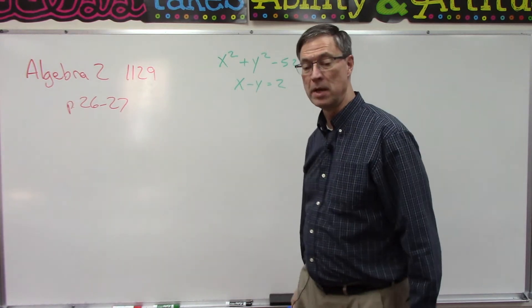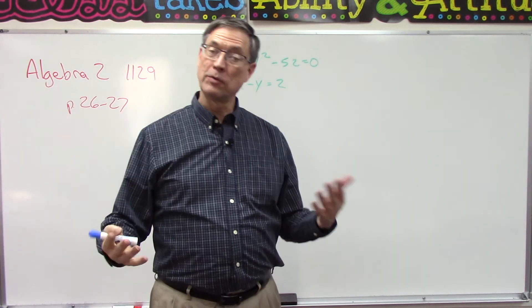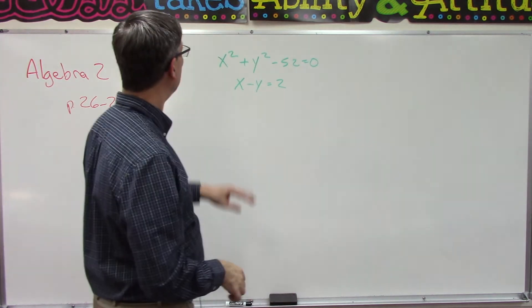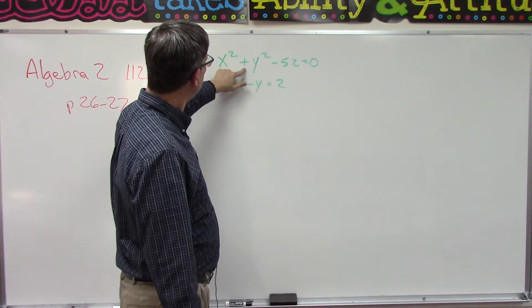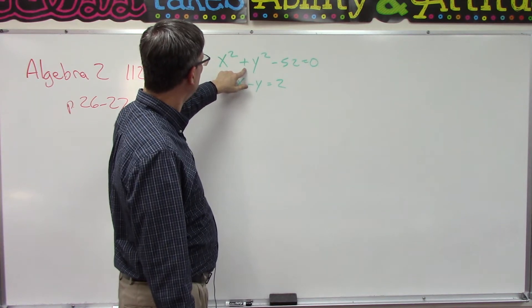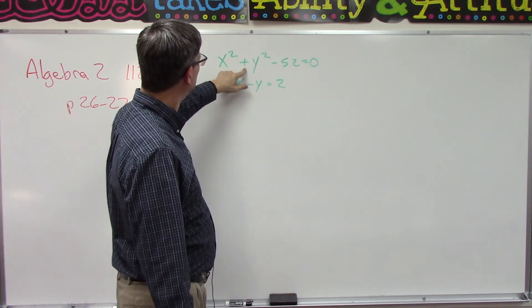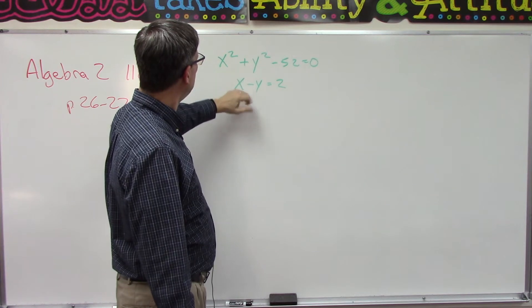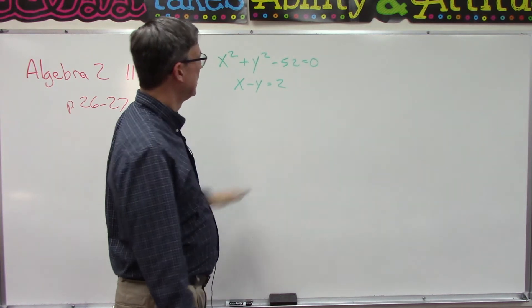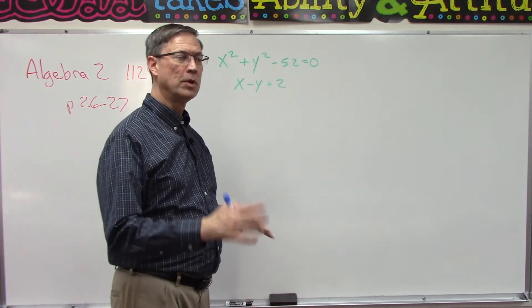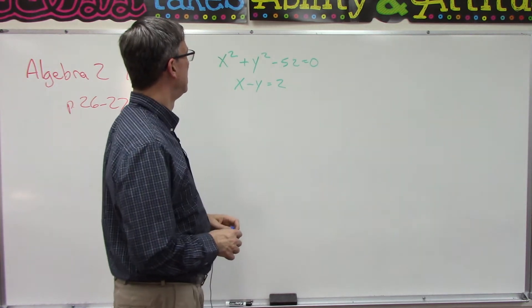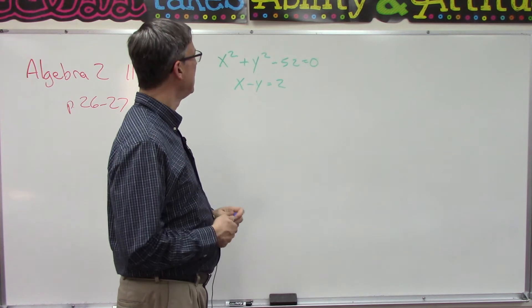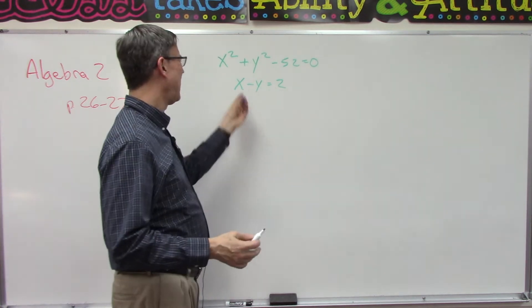Thankfully we don't have to graph these, but since this is plus, would that be the ellipse or would that be the hyperbola? This would just be a line, so it kind of intersects through there and we're gonna basically find two points where the graphs would cross. Let's just dive in.